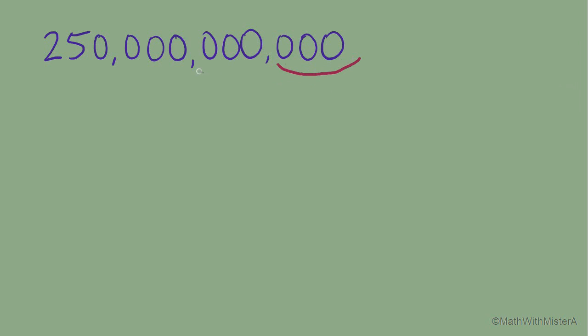This is our ones group, and then the thousands group. Here's the millions group, and then lastly is the billions group. So we have 250 billion. And we could write this number using the word billion, 250 billion.